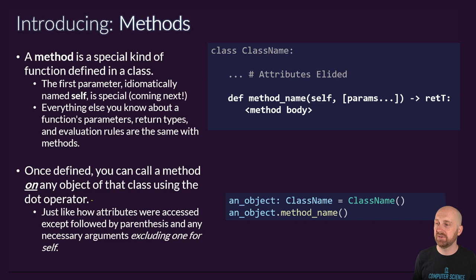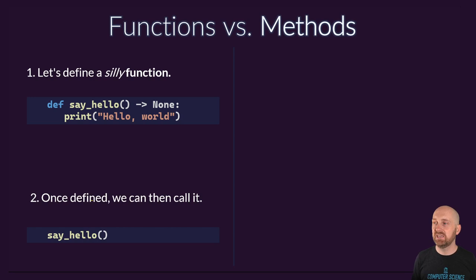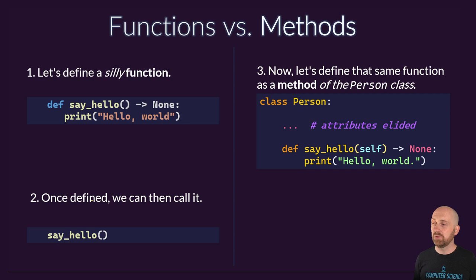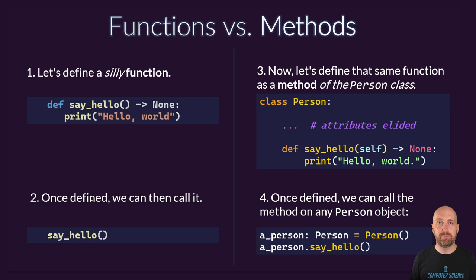If we wanted to compare a plain function versus a method: with a plain function, we define it outside any class and call it directly by name. With a method, we define it inside the context of a class definition and give it the special self parameter. You might think this seems like a lot of extra work — both examples required more code than just functions. But let's look at why methods are important in the next examples, and what the real gains are of using them and why they're important to object-oriented programming.